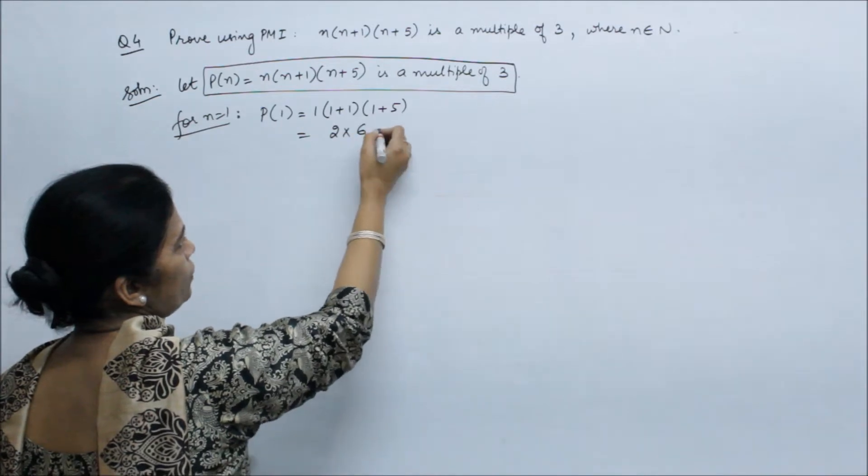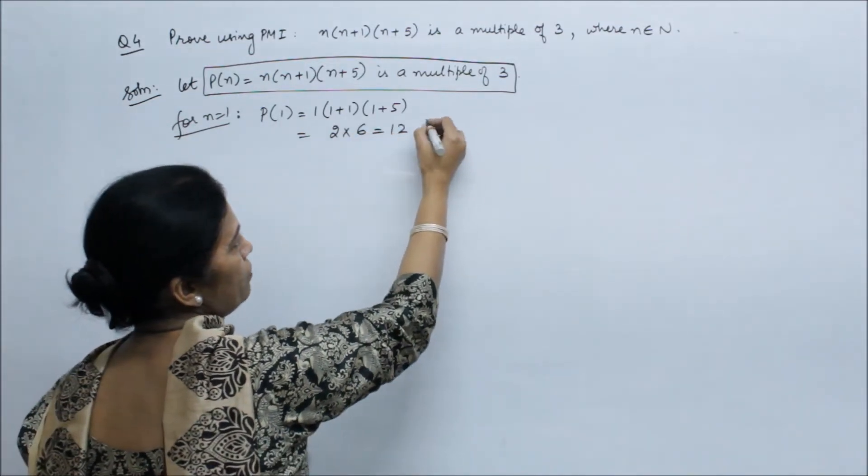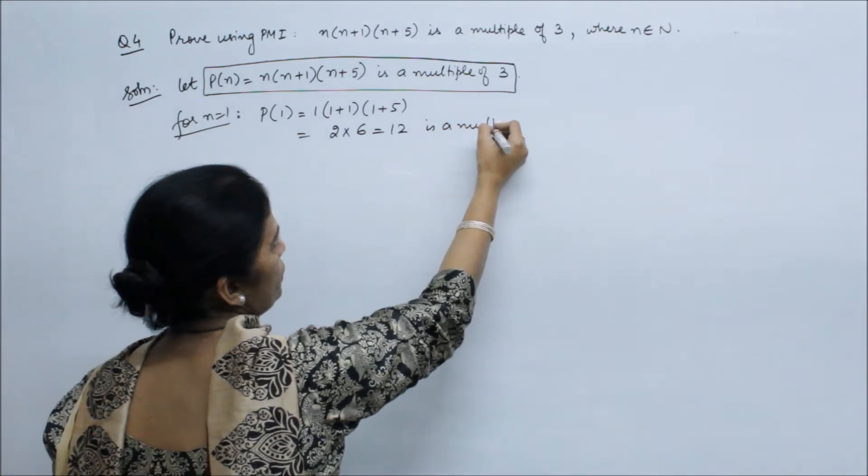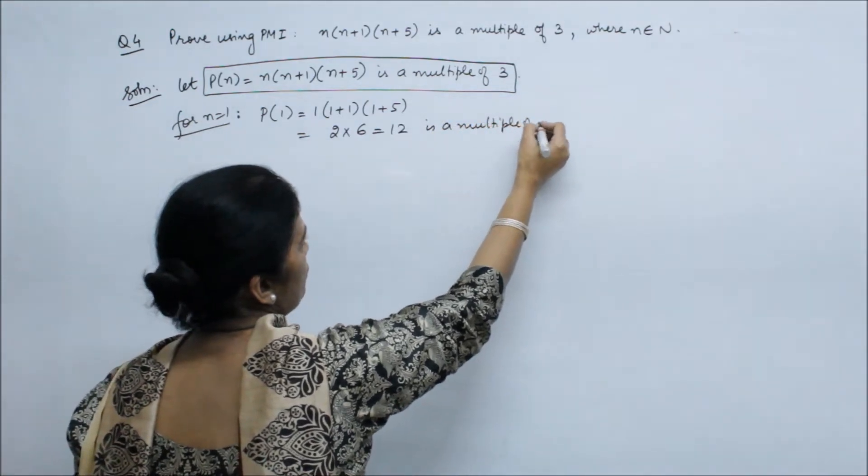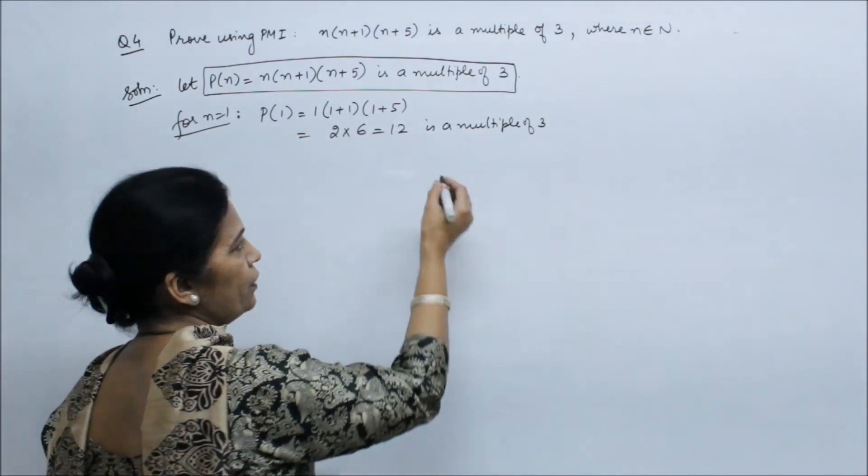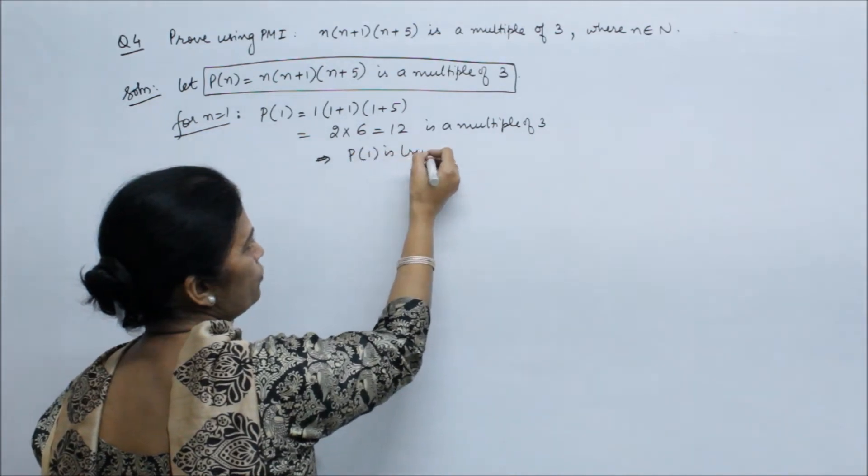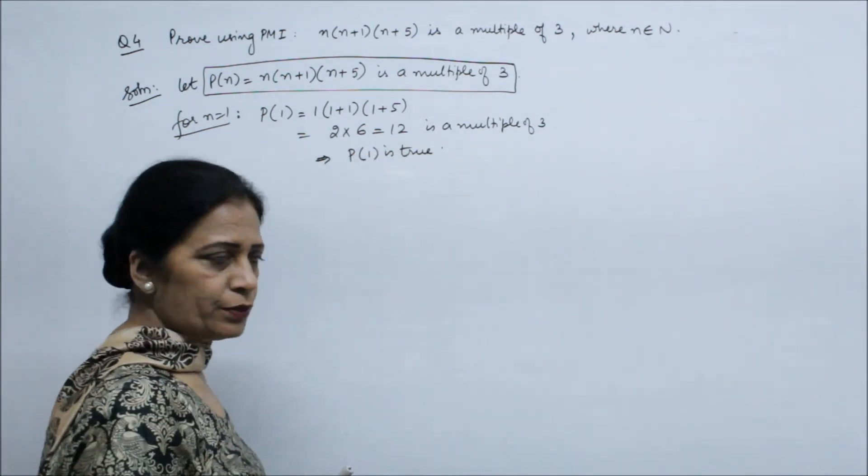From the statement, 1 into 1 plus 1, that is 2, into 1 plus 5, that is 6. So 1 into 2 into 6, that is 12, is a multiple of 3. So P(1) is true because this is a multiple of 3.